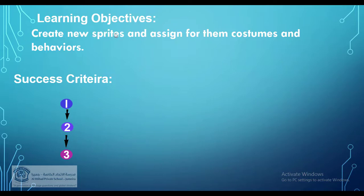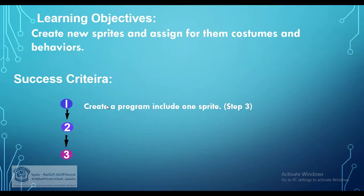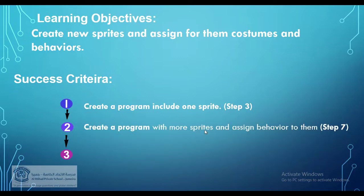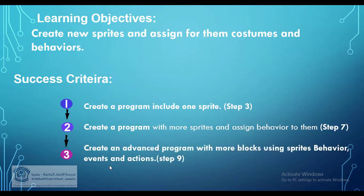You're going to know what sprites mean. Our success criteria: number one, create a program that includes one sprite — you need to complete up to step three, practice number three. Number two, create a program with more sprites and assign behaviors to them up to step number seven, practice number seven. Number three, create an advanced program with more blocks using sprite behaviors, events, and actions — this is in step number nine, practice number nine.